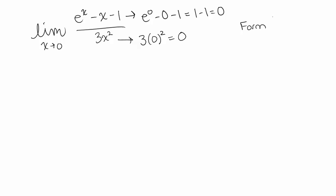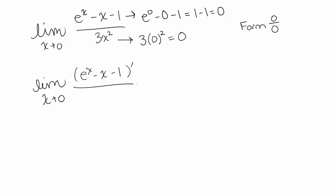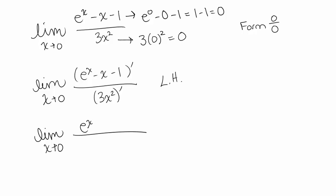So this does have a form of 0 over 0 and we can use L'Hôpital's rule. To apply L'Hôpital's rule, we take the derivative of the top of this fraction — e to the x minus x minus 1 — and separately the derivative of the bottom. That gives us the limit as x goes to 0. The derivative of e to the x is e to the x, the derivative of minus x is minus 1, and the derivative of minus 1 is 0. On the bottom we have the derivative of 3x squared, which is 6x.